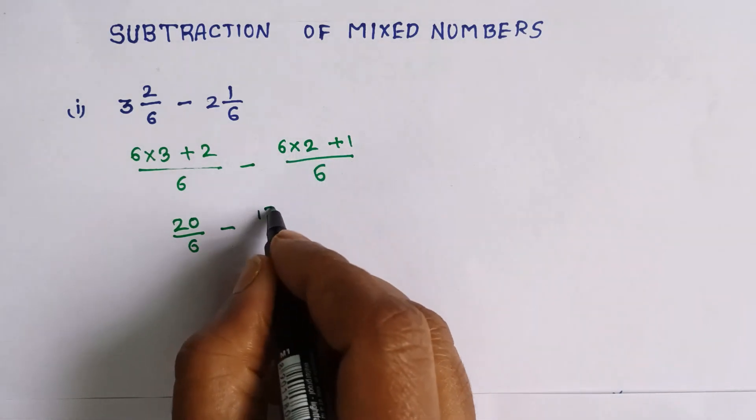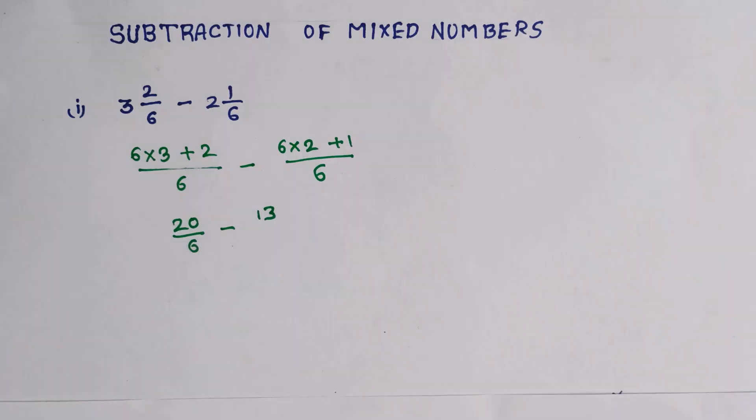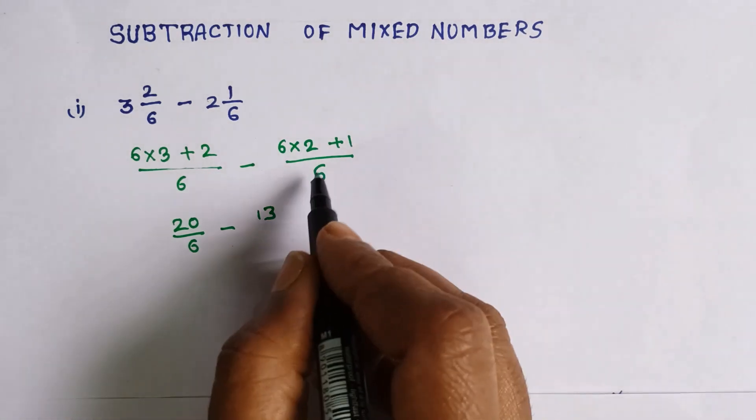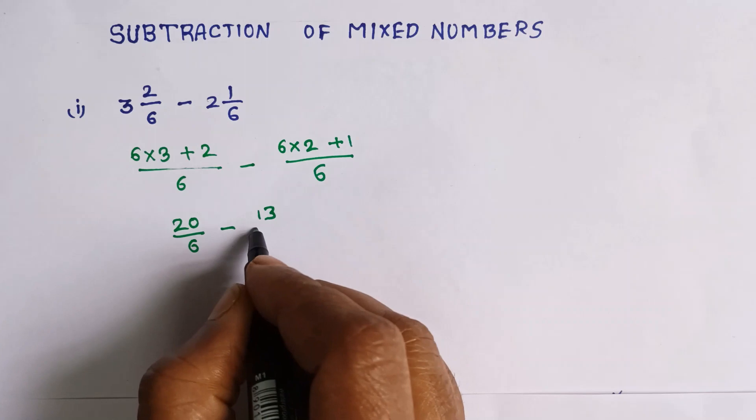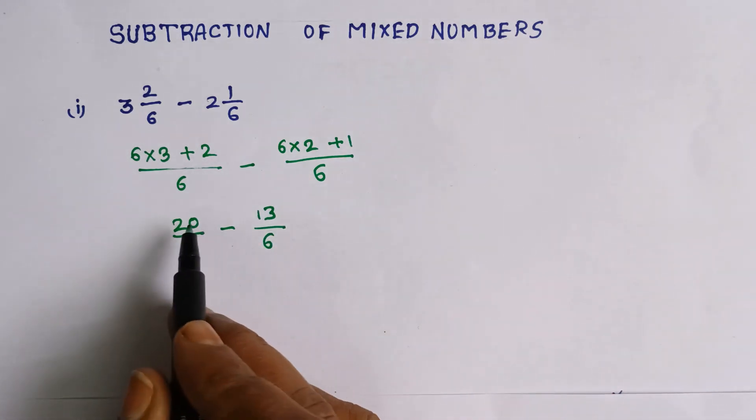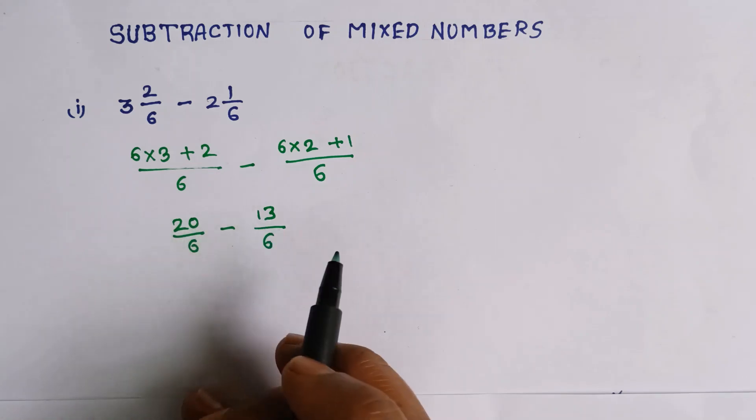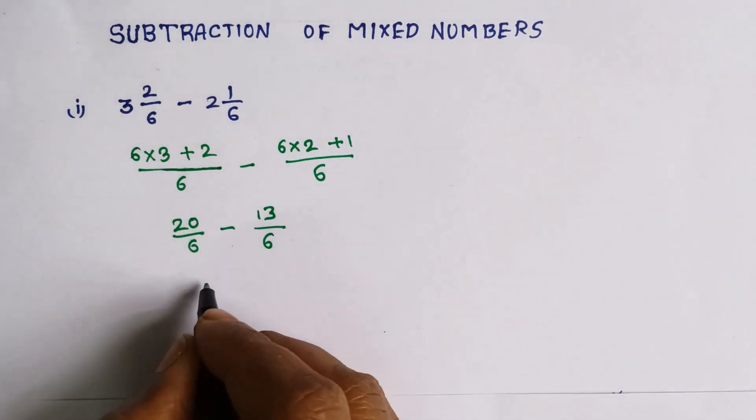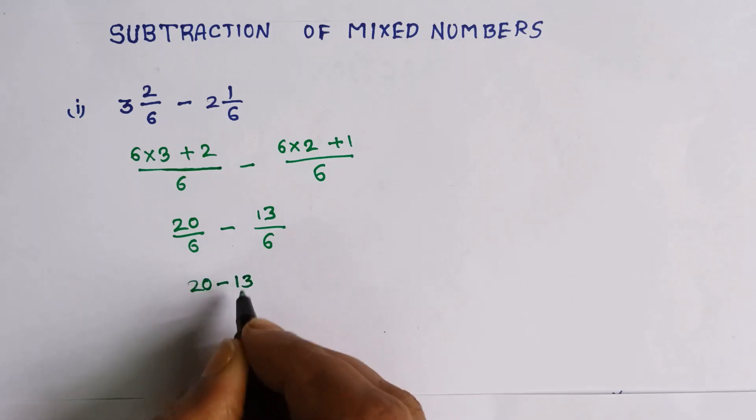13 by 6. Both denominators are equal, we can subtract directly the numerators: 20 minus 13 by 6.